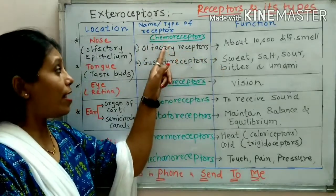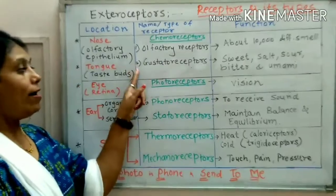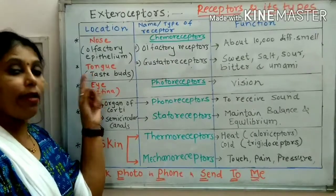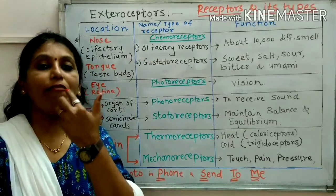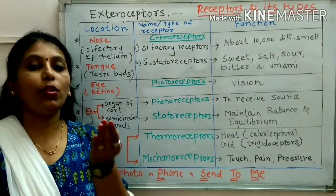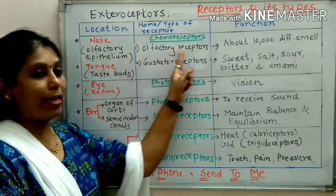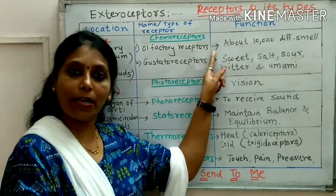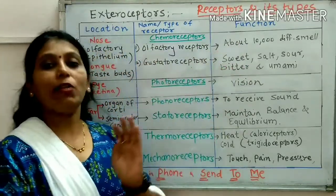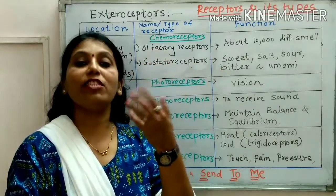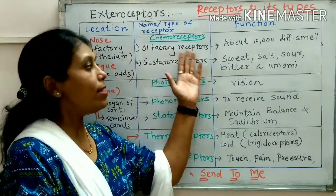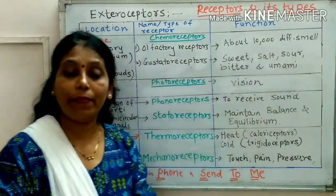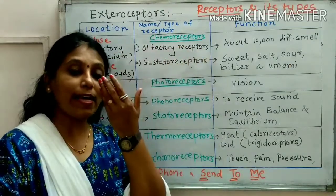In chemoreceptors there are two varieties: one is called as olfactory receptors and another is called as gustatory receptors. Gustatory receptors are present in the tongue. The olfactory word relates to the olfactory bulb in the brain, which is responsible for smell. These olfactory receptors get stimulation of approximately 10,000 different smells. These receptors are present inside the nose.